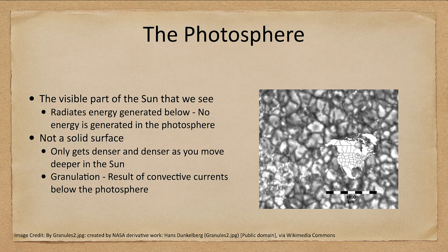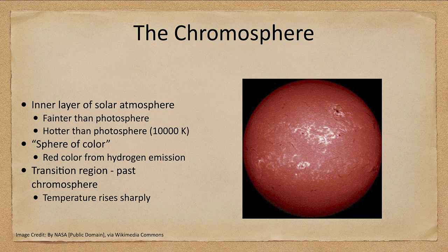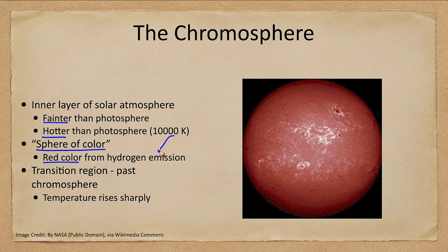The Sun also has an atmosphere. The inner layer of the atmosphere is called the chromosphere. The chromosphere is fainter than the photosphere but hotter, and it is sometimes called the sphere of color because of its red color from hydrogen emission. At around 10,000 degrees, hydrogen emission is at its peak and most intense. While there is some hydrogen emission at the surface, 6,000 degrees isn't enough to excite hydrogen as well — but at 10,000 degrees, it's very effective at exciting that hydrogen gas and causing it to glow.